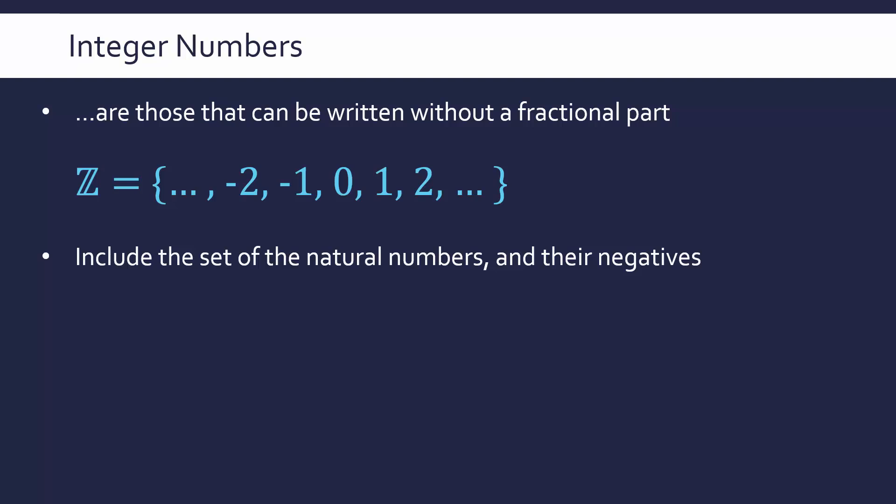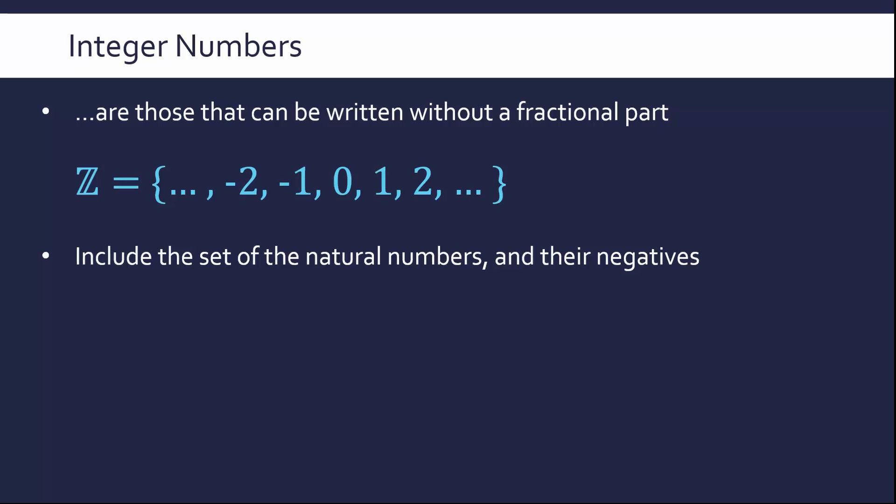The integer numbers are these whole numbers. They include the set of natural numbers but also their negatives. So we have the natural numbers but also the negative as well. We can go up to plus infinity and negative infinity for these.